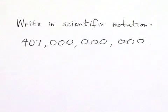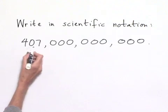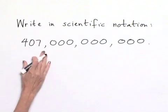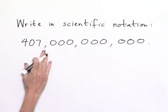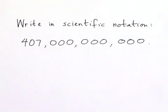Write in scientific notation: 407,000,000,000. Let's think about how to say this. This would be thousands, this would be millions, and this would be billions. So we have 407 billion.